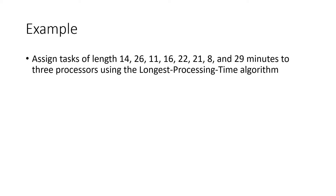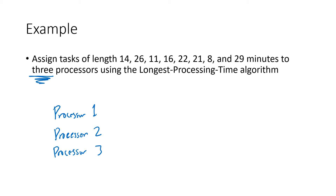Let's work through an example. We have tasks of lengths 14, 26, 11, and so on, and we want to assign them to three processors. This is different from before — here, we know we have three processors to start with. I'll write down processor one, processor two, and processor three, and keep track of how much has been assigned in total to each. Right now, nothing has been assigned, so everyone's at zero.